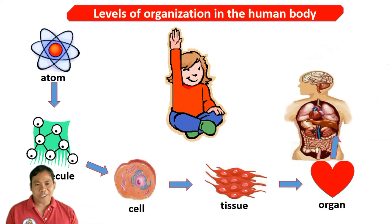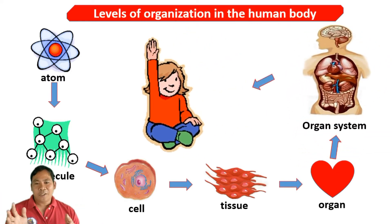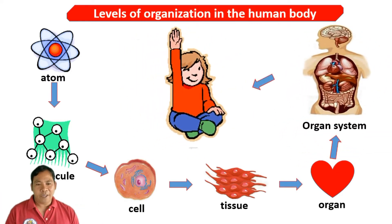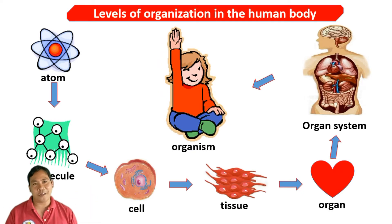These systems depend on each other and work together in the body of an organism. The human body is made up of different body systems that work together.